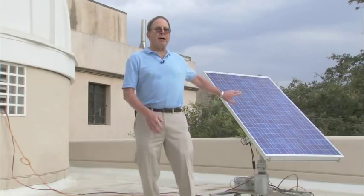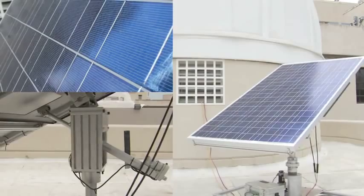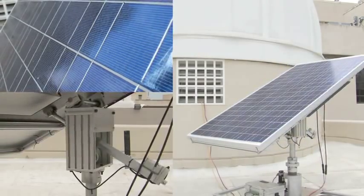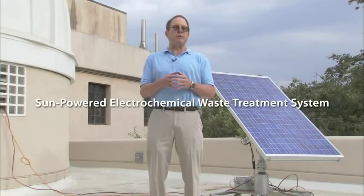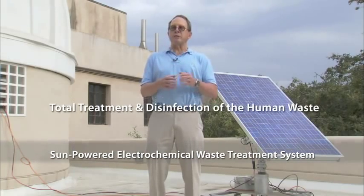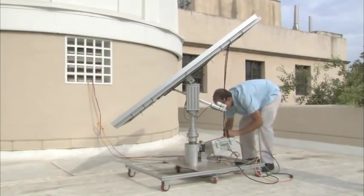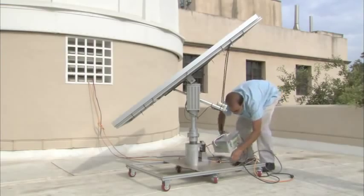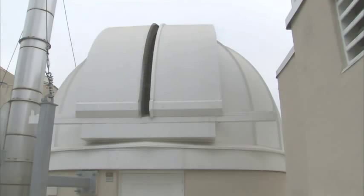So our system is totally powered by incoming solar light that is captured with photovoltaic panels. In a single day of sunlight, we can store enough energy in batteries to drive an electrochemical waste treatment system, which can totally treat the waste and produce useful byproducts. Graduate student Clement Sid will continue to explain some of the fundamental aspects of the solar powered electrochemical treatment system, which is housed off to my right in the solar dome.